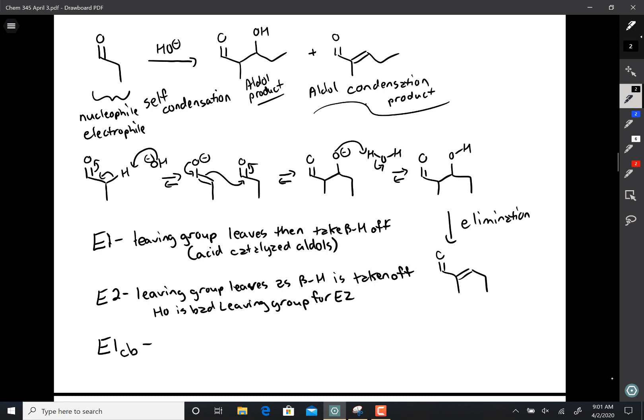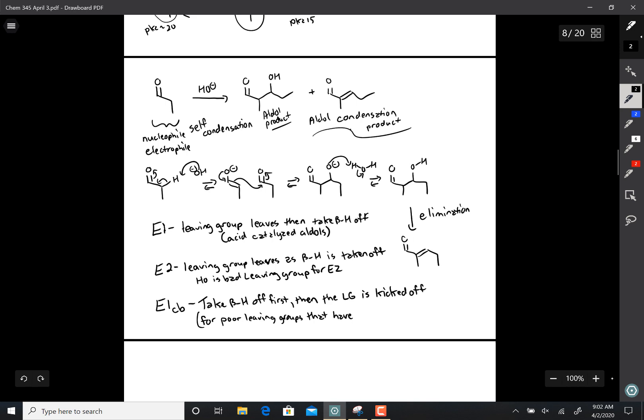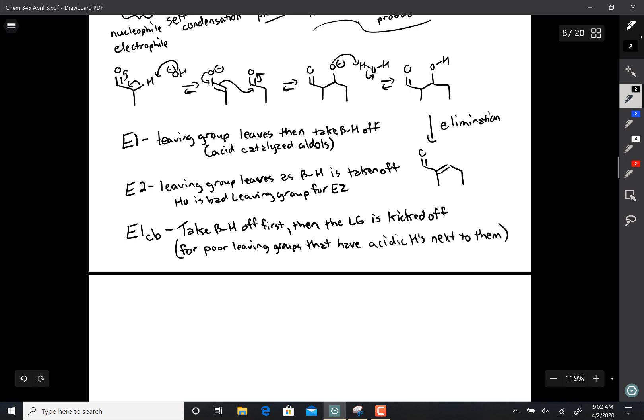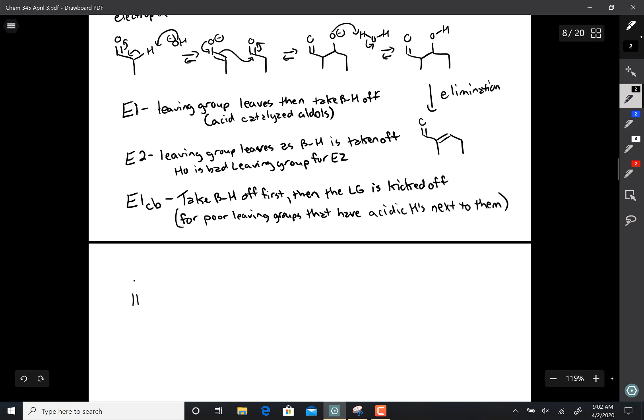So the mechanism for this elimination is a third type of elimination. It's called an E1CB mechanism. And what it is, is it's the opposite of the E1. You take the beta hydrogen off first, then the leaving group is kicked off. And this is what's used for poor leaving groups that have acidic H's next to them.